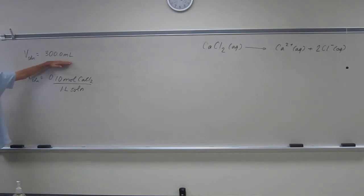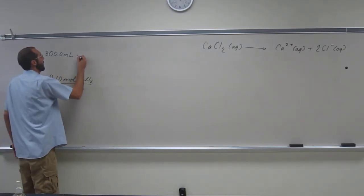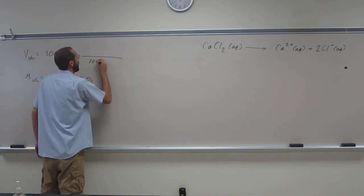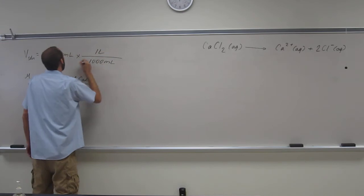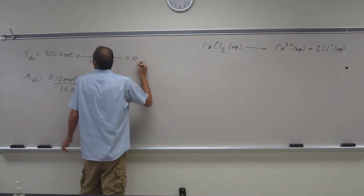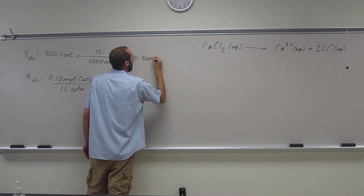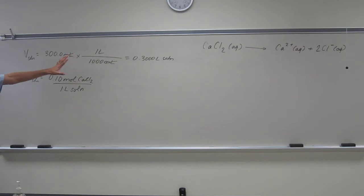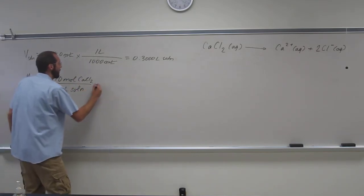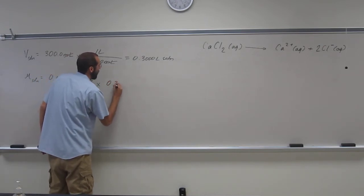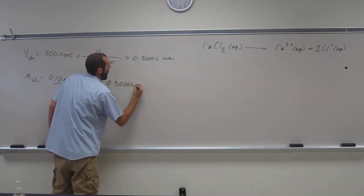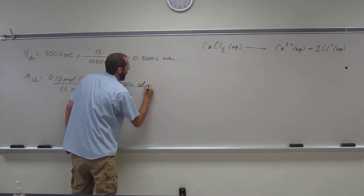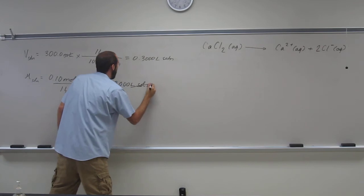So we know how much liters of solution we have while we convert to it. Everybody's okay with that? So now, can we figure out how many moles of calcium chloride we have in 0.3 liters of solution? We should be able to by multiplying it for it.